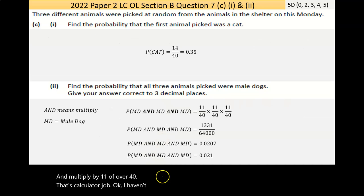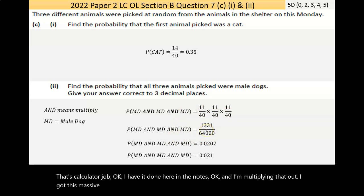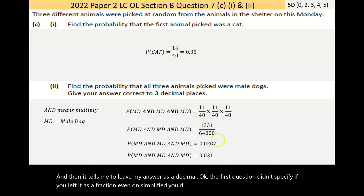Now, and means multiply. Another male dog, 11 out of 40. And multiply by 11 out of 40. Now, let's calculate a job. I have it done here in the notes. And I'm multiplying that out. I get this massive number here. And then it tells me to leave my answer as a decimal. The first question didn't specify. If you'd left it as a fraction, even unsimplified, you'd have gotten full max. Or as a decimal, even as a percentage. That's usually how the marking scheme is applied.